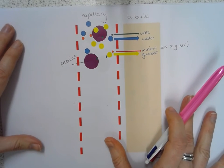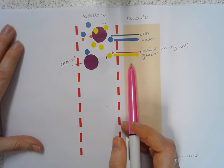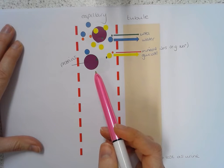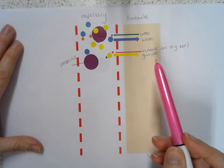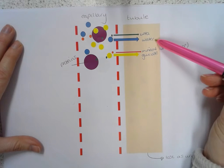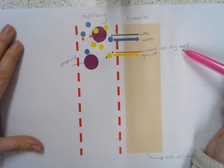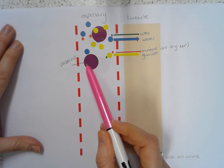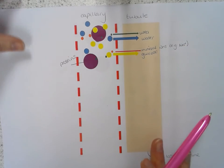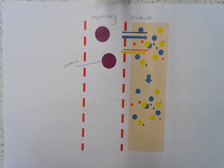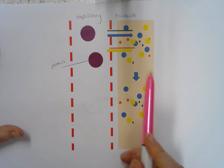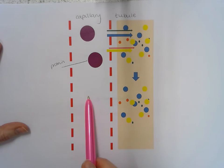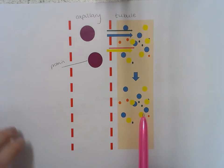At the very beginning of the tubules, the very high pressure forces smaller substances through the capillary walls into the tubules. Those substances include urea, water molecules, mineral ions such as sodium, chloride, and potassium, and glucose. Larger substances such as proteins are not small enough to pass through those gaps, so they stay within the blood in the capillaries. We don't want all of those filtered substances lost as waste — we want some of them reabsorbed back into the capillaries through a process of selective reabsorption.